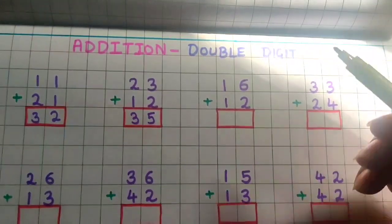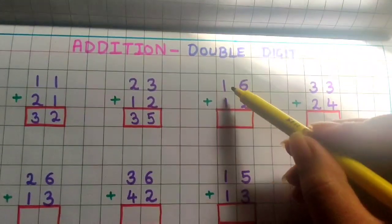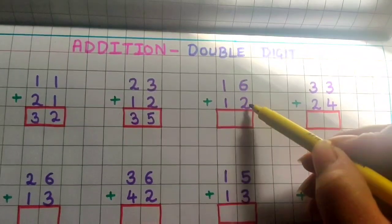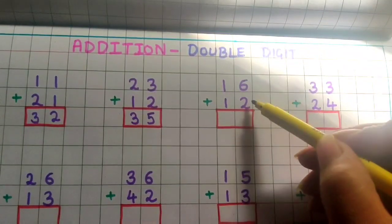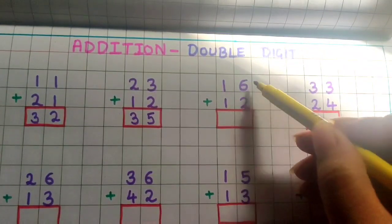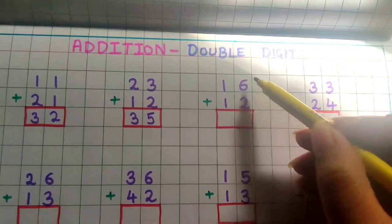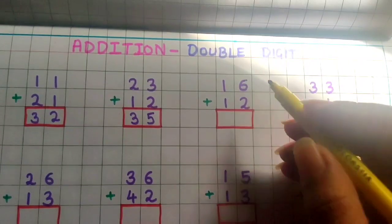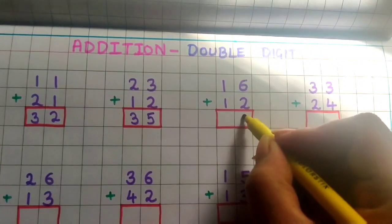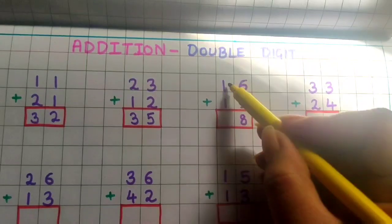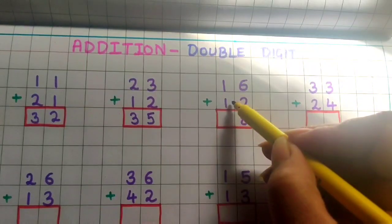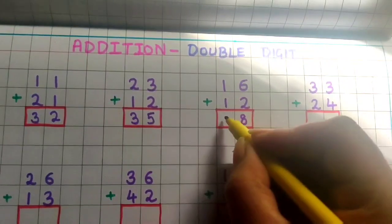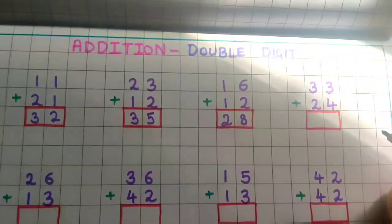Ok children, now next: 16 plus 12. So first I will do the addition of the numbers present in the ones place — 6 plus 2 is 8. So here I will write 8, and 1 plus 1 is 2. So the answer is 28.